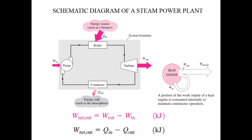In the boiler, heat is added so Q is positive. In the turbine, work is output so W is positive. In the condenser, heat is rejected so Q is negative. In the pump, work is applied so W is negative. The net work done W_net equals the work output minus the work input.